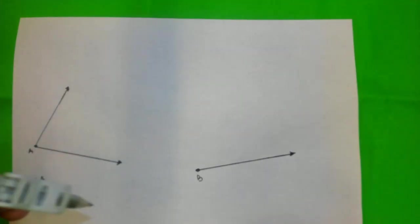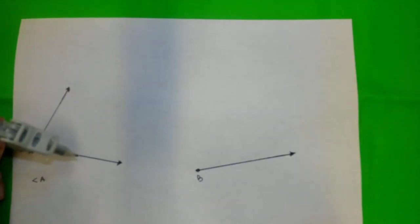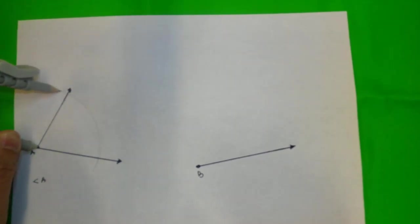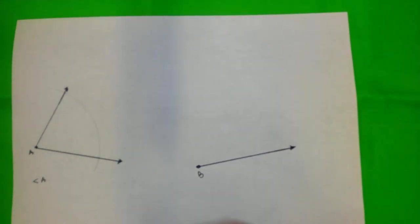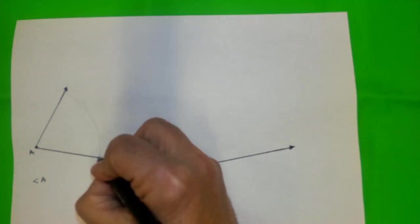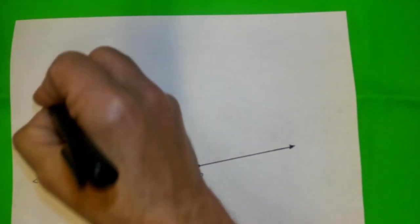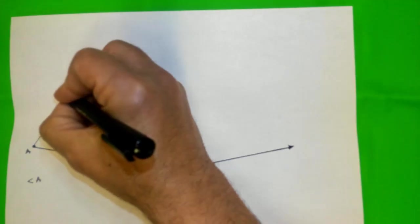And the first thing I'm going to do is take this compass, put it on point A here, and draw this arc. If you notice, we have two intersection points. Let me call this C and this point D.